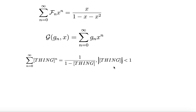In the previous episode of the series — check that out if you haven't seen it yet — we ended by looking at the closed form of the generating function of the Fibonacci numbers: the sum as n goes from 0 to infinity of f_n x^n, which, for some radius of convergence r, is equal to x over 1 minus x minus x squared.